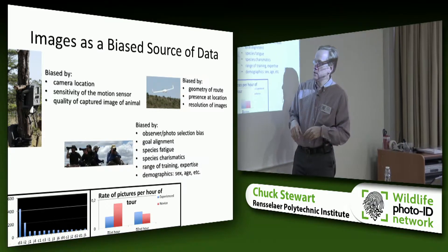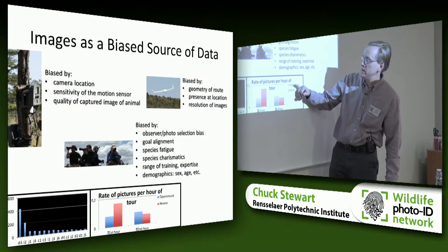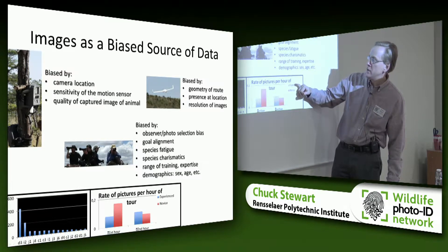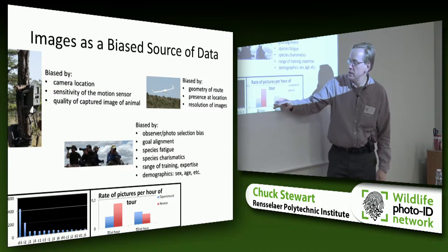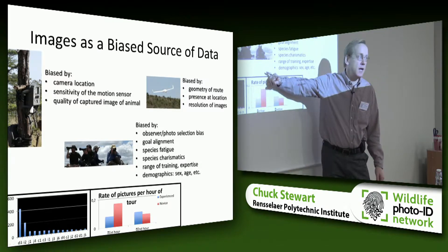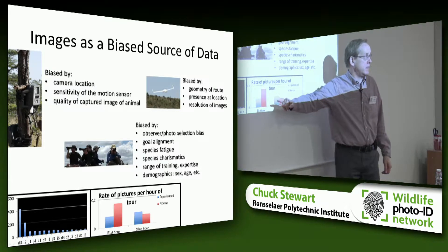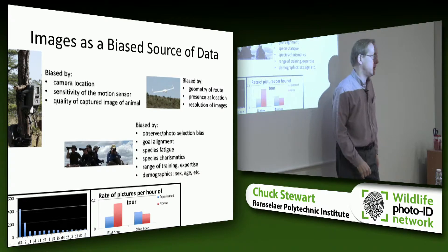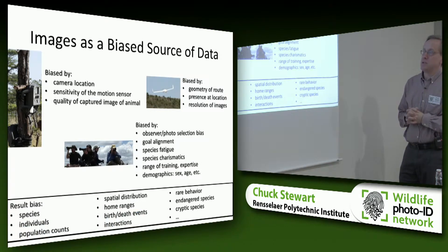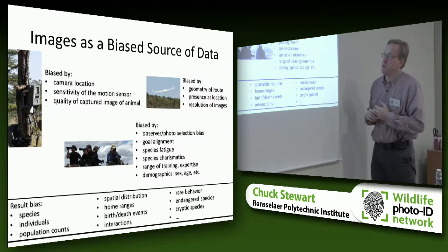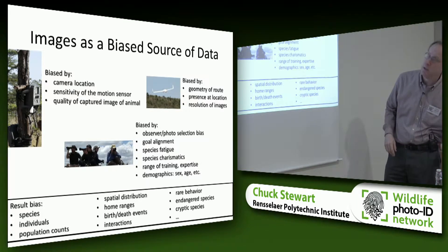A quick example from this summer: comparing an experienced tour photographer versus a novice on the same tour. The experienced person has a fairly steady picture-taking rate, whereas the novice takes lots of pictures in the first hour and then drops off quickly. We expect even bigger differences when we break this out by species, giving us biases according to species and locations that affect population counts.